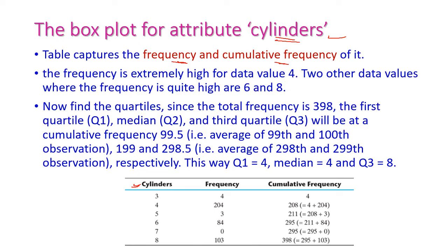The cylinder values lie between 3 and 8 only. This table explains the frequency and cumulative frequency of the cylinder attribute. Cylinder 4 has a frequency of 204, cylinder 6 has frequency 84, and cylinder 8 has frequency 103. Because of this frequency distribution, Q1 and the median are both 4.